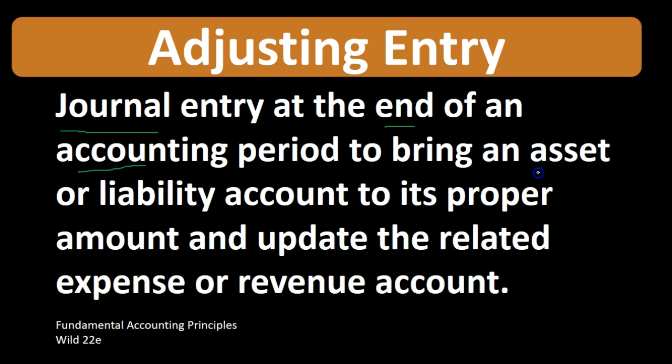We typically bring the asset accounts and liability accounts to their proper amount in accordance with an accrual basis, and then we adjust the related expense and revenue accounts. What that means is that adjusting entries are usually going to have at least one balance sheet account affected and one income statement account affected. We often identify them by the balance sheet account that we're going to have to adjust.